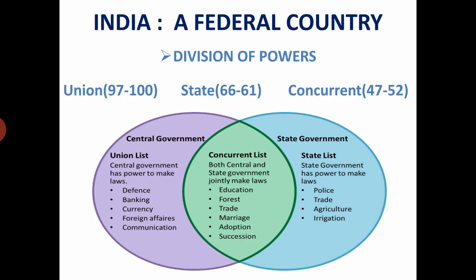The state list initially consisted of 66 items, but now it has 61 items. It includes subjects such as police, agriculture, irrigation, and trade. The state governments make laws on the subjects included in it. However, the constitution empowers the central government to make laws on subjects of the state list during national emergency, or if two or more states give their consent to the parliament, i.e. central government.